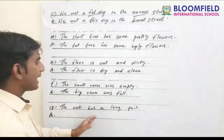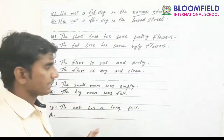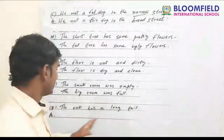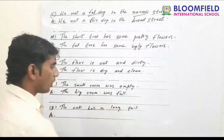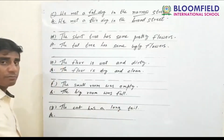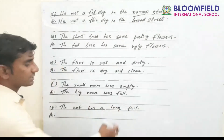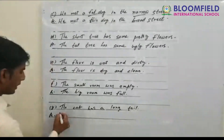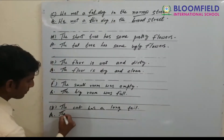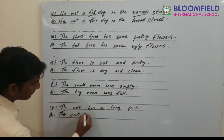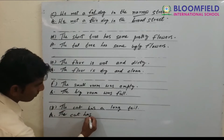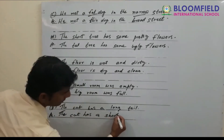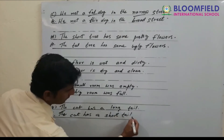Next: 'The cat has a long tail.' Which type of tail does the cat have? A long tail. The adjective is 'long.' The opposite of long is short. So the answer is: the cat has a short tail.